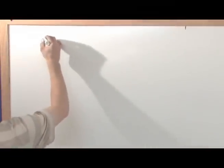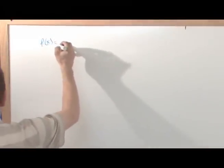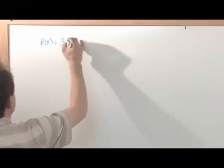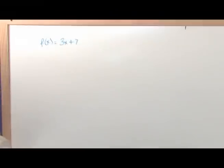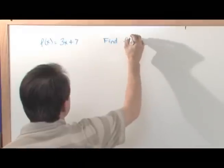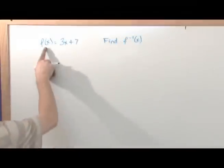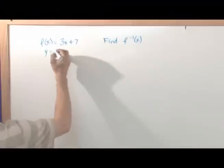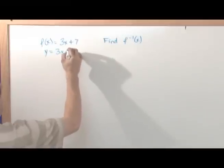So if f(x) is equal to 3x plus 7, what I want to do is find f inverse of x. So the first step is to replace f(x) with y. y is equal to 3x plus 7.